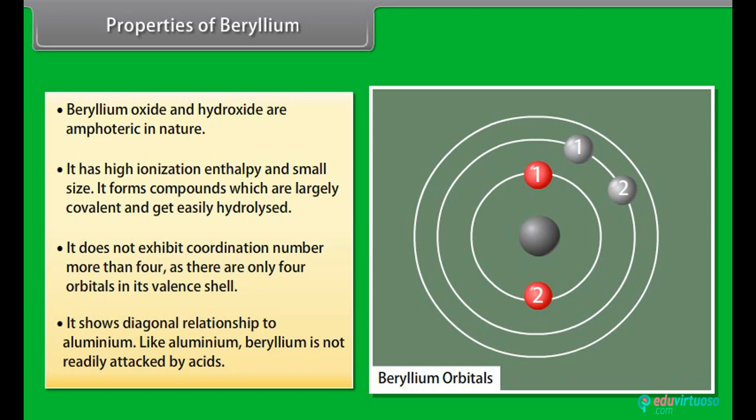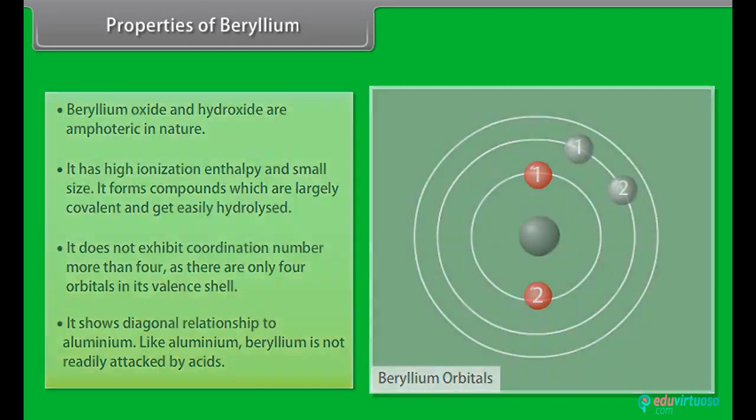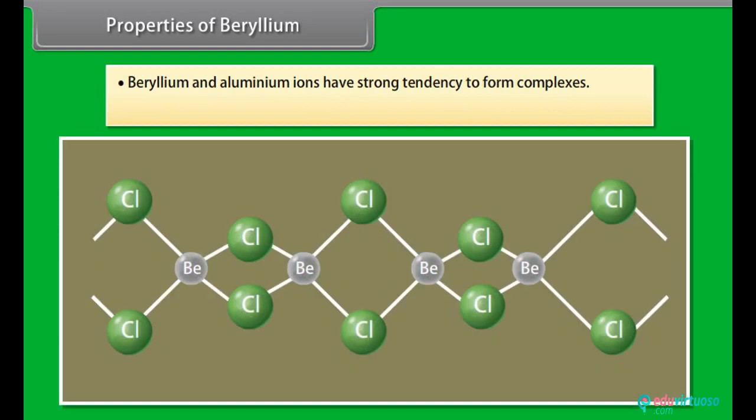Like aluminum, beryllium is not readily attacked by acids. Beryllium and aluminum ions have strong tendency to form complexes. Chlorides of both are soluble in organic solvents and are strong Lewis acids.